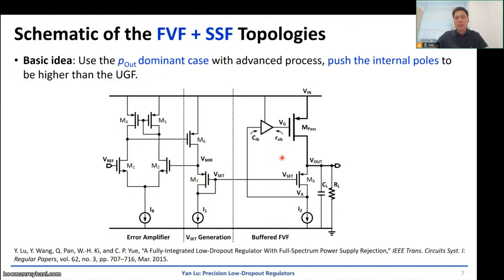Another interesting topology is we can insert the super source follower into the flipped voltage follower. And then we can have the output pole as the dominant pole for the local loop, for the FVF loop. So basically the buffers split a low-frequency pole into two high-frequency poles. We can use better process, more advanced process to generate a high bandwidth local loop here. And then Vsat will set the DC operation, the DC value of the output. So this is an interesting combination of the FVF and SSF topologies.